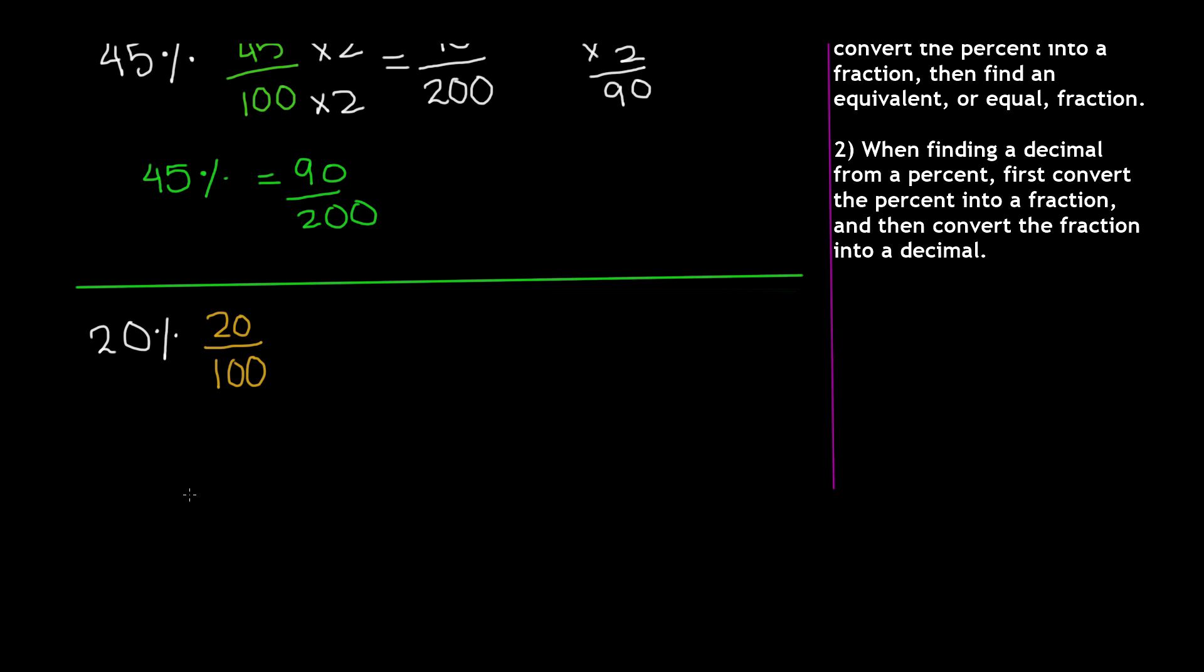Next step is pretty simple. All you have to do is find a decimal that is equal to this fraction. And in order to convert a fraction into a decimal, all you have to do is divide the numerator, which is the top number, by the denominator, which is the bottom number.